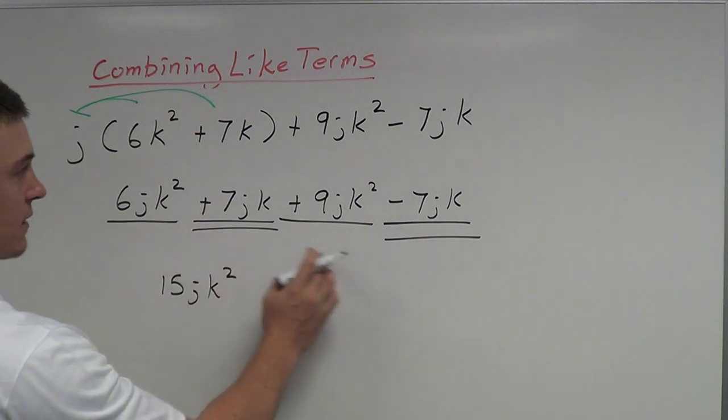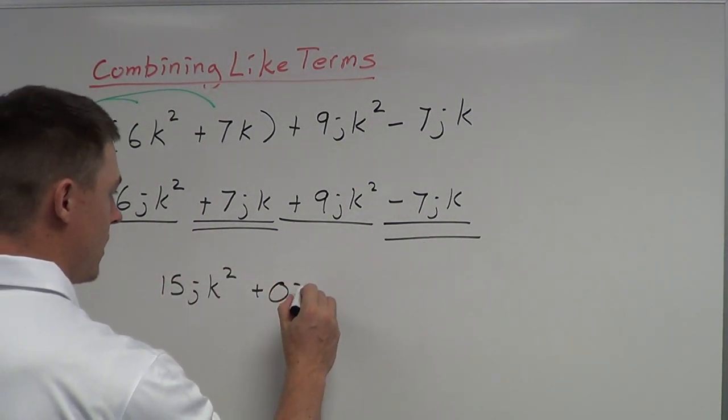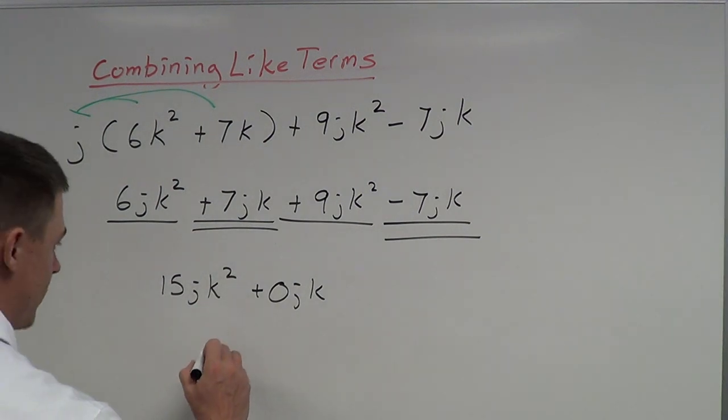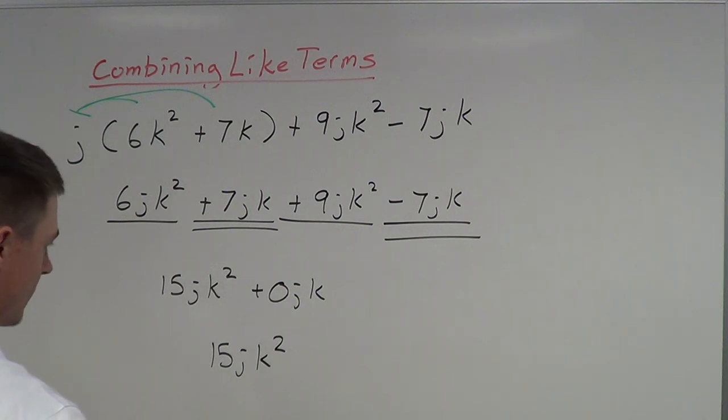The second one here, 7 minus 7 is 0jk. Now if you get a 0jk, that actually just goes away. So my final answer is going to be 15jk². That is my final answer.